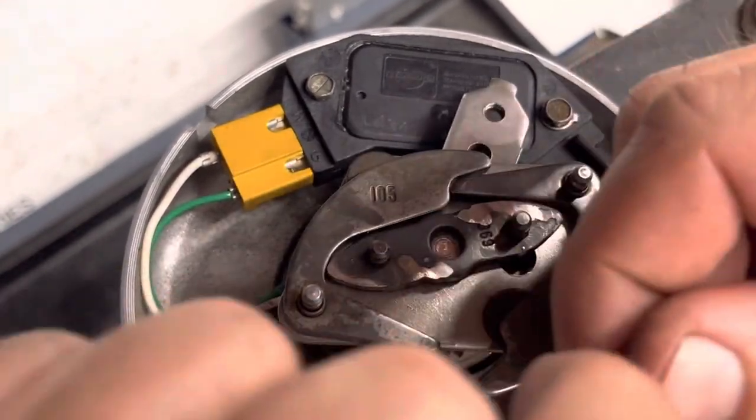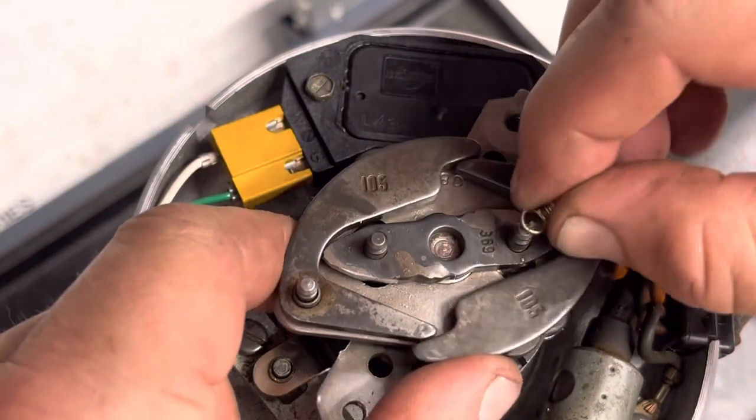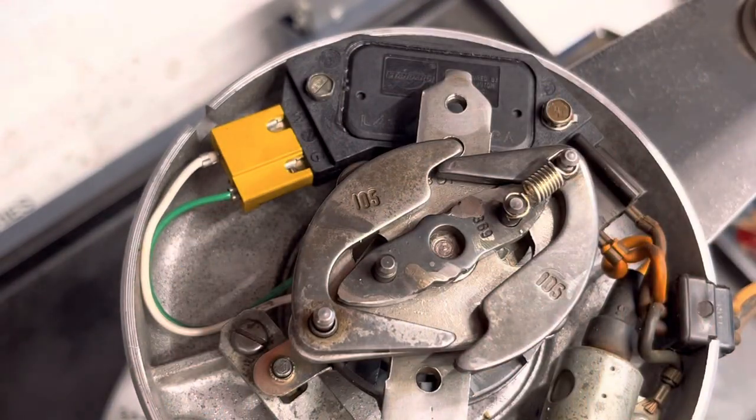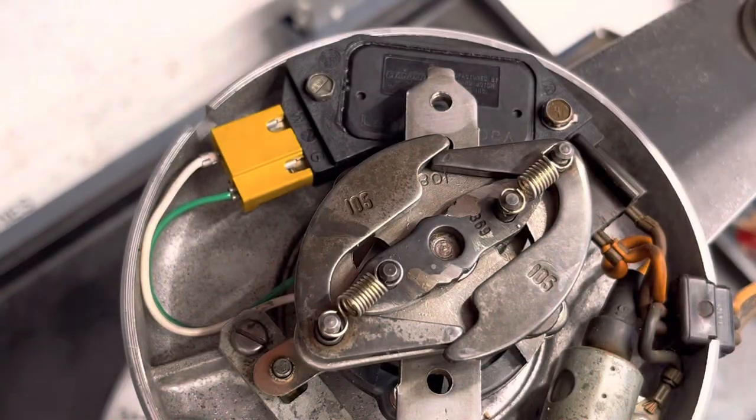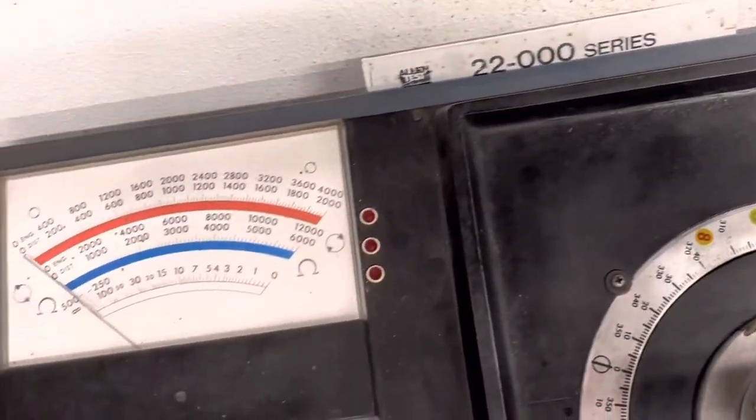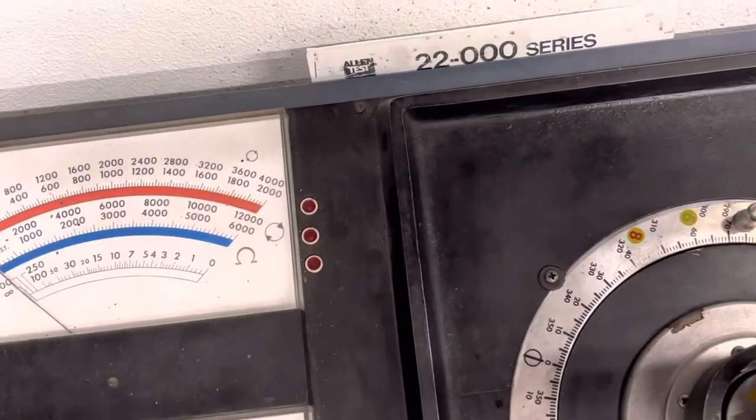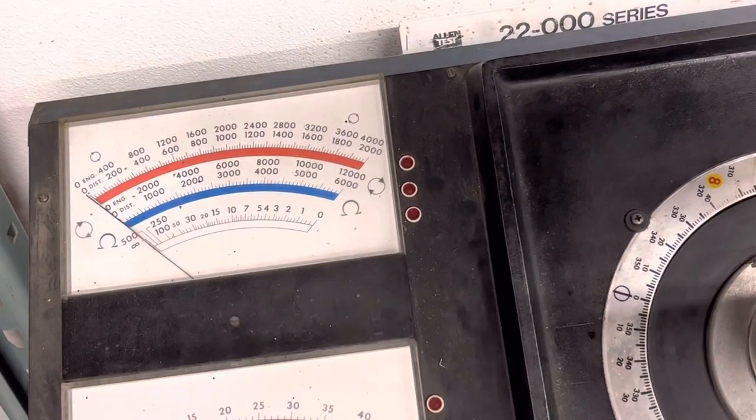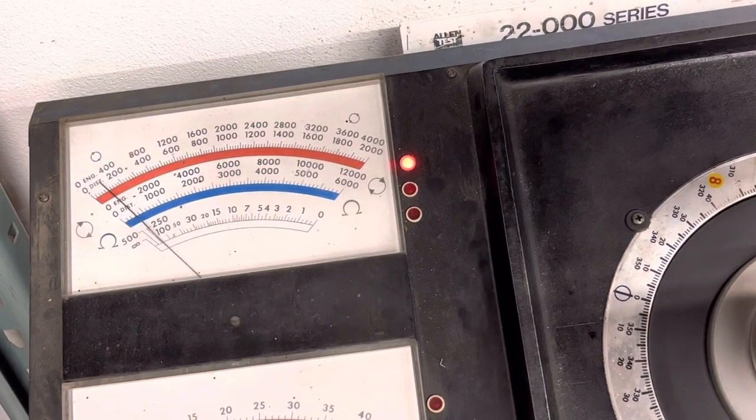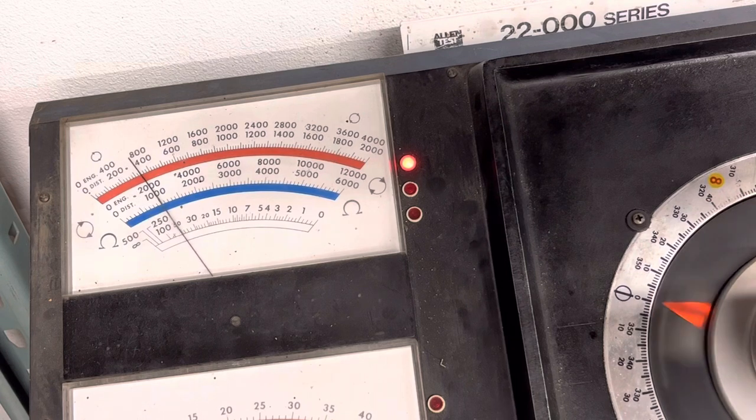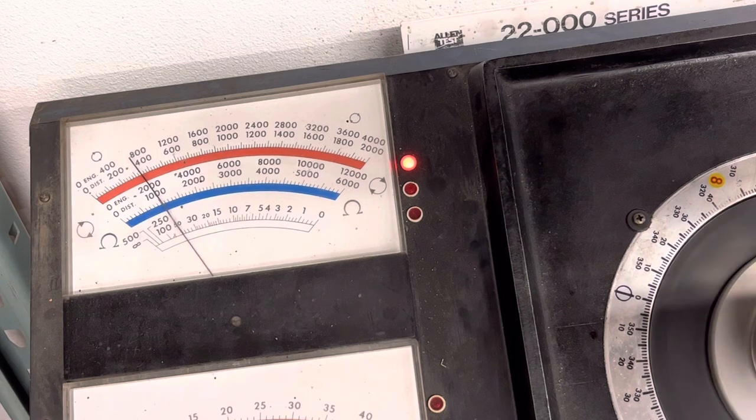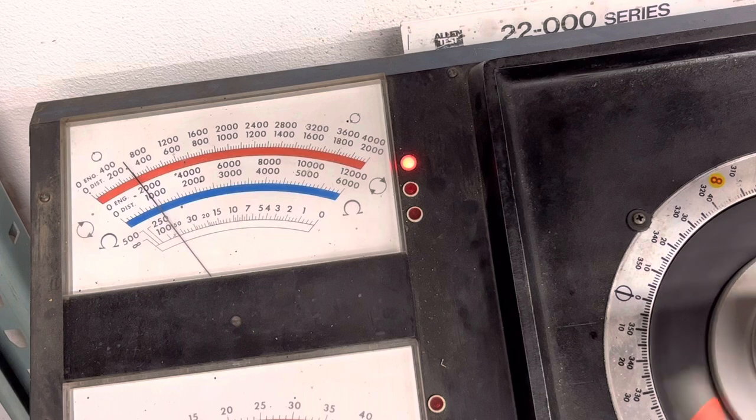Sorry about that. Let me redirect my camera here. All right, hopefully that will show you the distributor machine. So we have it zeroed out there. We are at around 600 RPM.